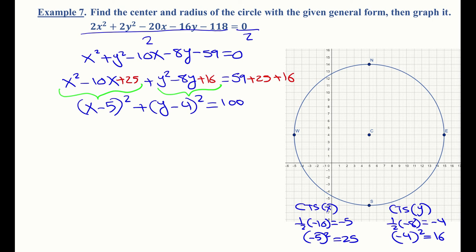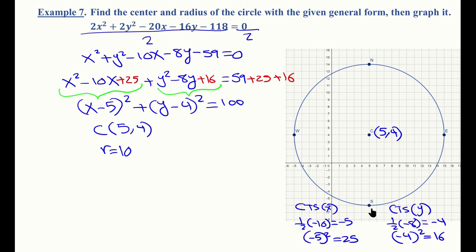We now have (x minus 5)² plus (y minus 4)² equals 59 plus 25 plus 16, which is 100. We can see that the center is at (5, 4) and the radius is 10. You would go 10 units right, left, up, and down from the center to get the four points to graph the circle. That pretty much brings our entire course to a wrap. Wishing you all great success and happiness in life — hopefully we'll see you in another class.